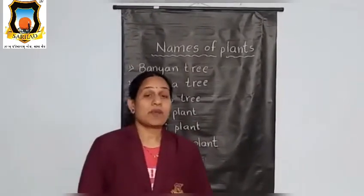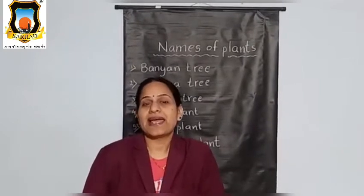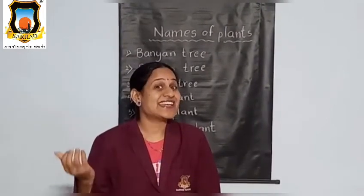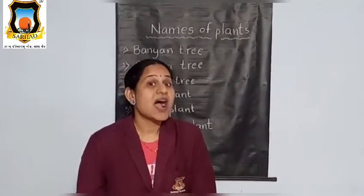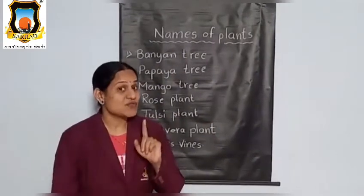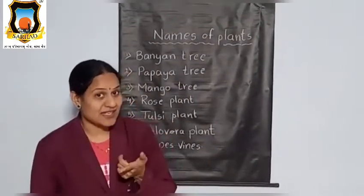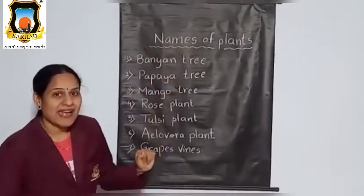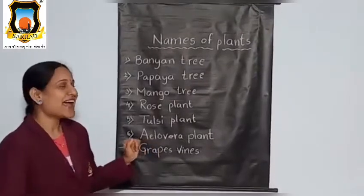Now tell me, what do we get from plants and trees? Yes, we get from trees: fruits and flowers and vegetables, and the most important thing is oxygen. All of this we get from trees. So now I will tell you some tree names. You have to say after me. Say after me everyone: names of plants.